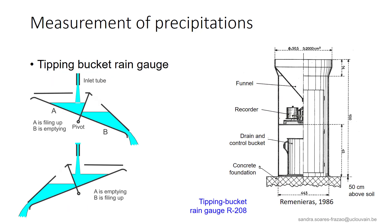The main drawback of simple rain gauges is that the bucket has to be emptied on a regular basis — daily, twice a day, or any other interval — and this has to be done manually by an operator.